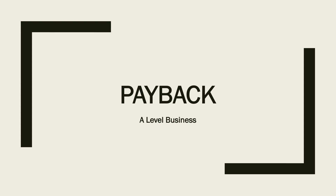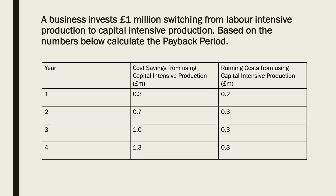Let's have a session on payback. This is for A-level Business. Here's the question: a business invests 1 million pounds switching from labour-intensive production to capital-intensive production. Based on the numbers below, calculate the payback period. Read through those numbers, particularly pay attention to the top of the table, then try and work it out before we go through it in a few seconds.